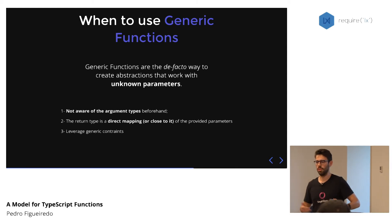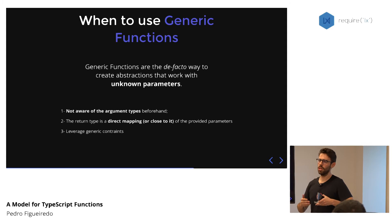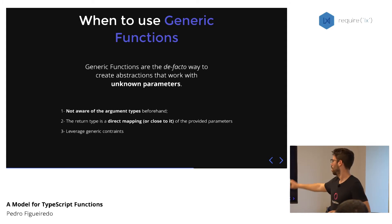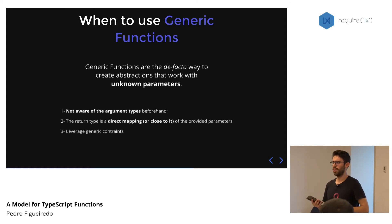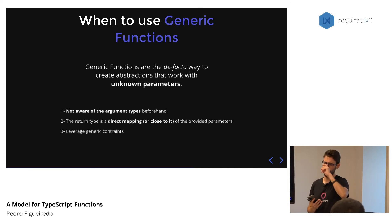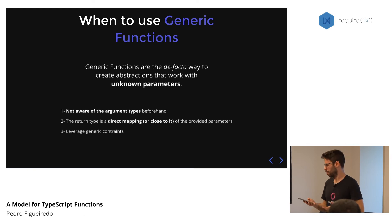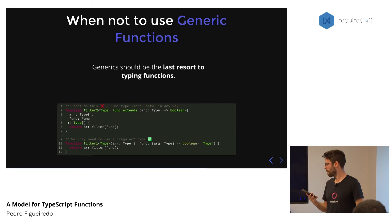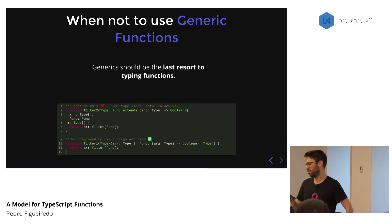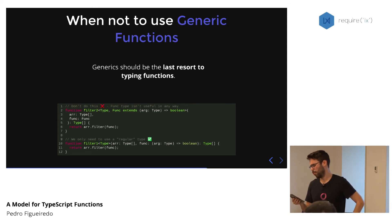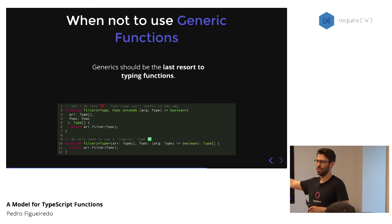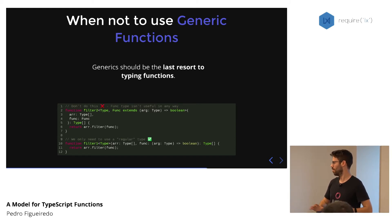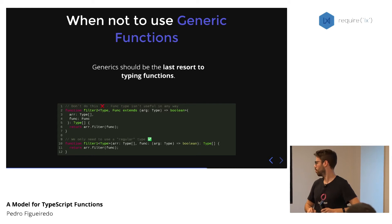Generics solve the problem where we are not aware of the parameter types before we use them. Another use case is when our return type is a direct mapping or closely related to the parameters. TypeScript even has a phrase in their docs saying 'always use as few type parameters as possible' — so it's not just me, it's really the people who know what they're talking about. Generics should be our last resort. If you can use other things and get away with simpler code, just do it.